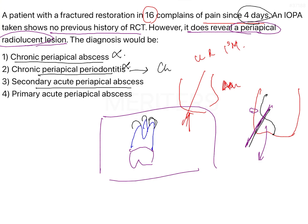Secondary acute periapical abscess can be ruled out because the question clearly states the patient had no history of RCT. If there was no history of RCT, there was no prior periapical pathology, meaning the pulp was vital and non-necrotic — in a healthy state — which is why a restoration was placed rather than root canal therapy. Had it been of secondary nature, there would already have been a history of RCT or similar lingering pain.